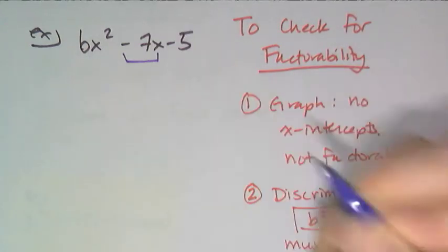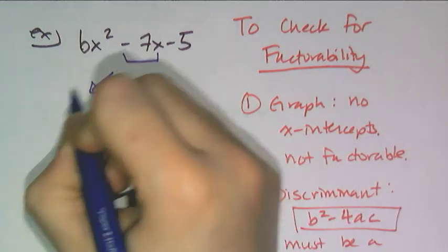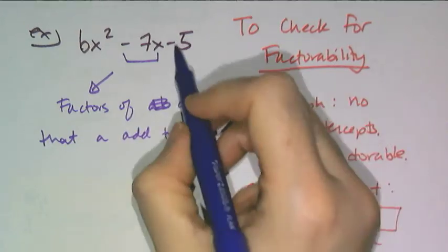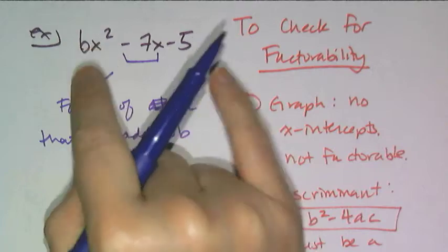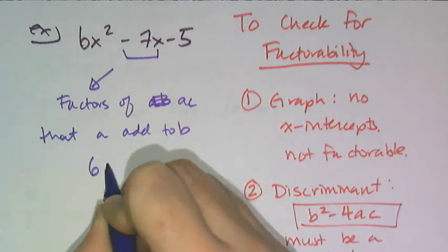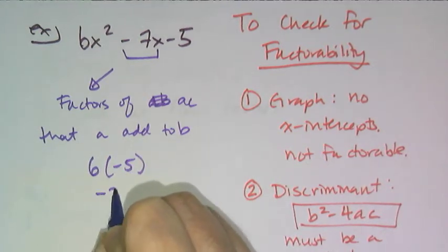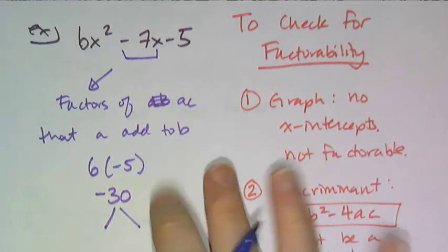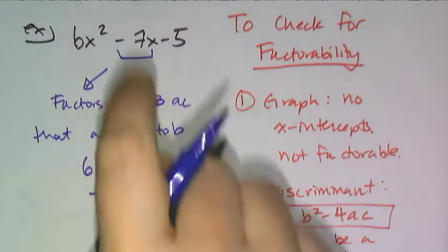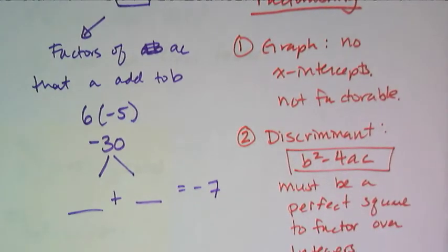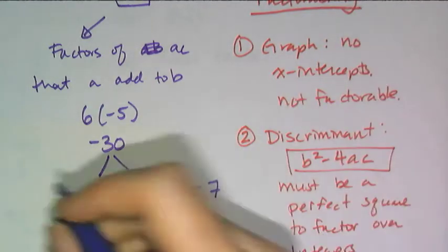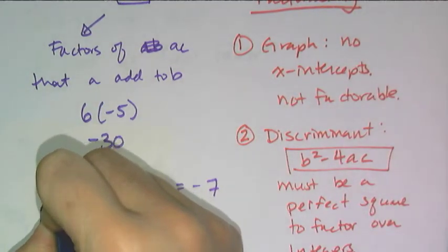I need to break up the negative 7x by looking at factors of ac that add to b. And it's not just the c. Remember, we have a 6x². So we're looking at the factors of ac that add up to b. In this case, it's going to be a and c are 6 and negative 5, which gives me a negative 30. So I'm looking for factors of negative 30 that, when added together, give me negative 7. And the sign matters. Always take the signs with these numbers. So factors of negative 30 that add to negative 7. That tells me that one's positive and one's negative.